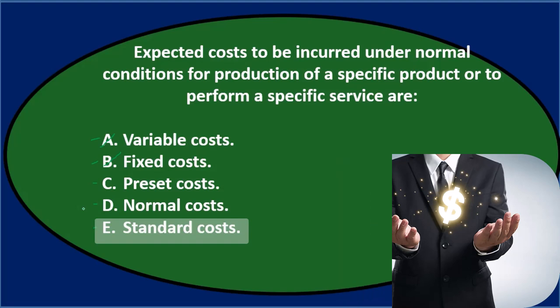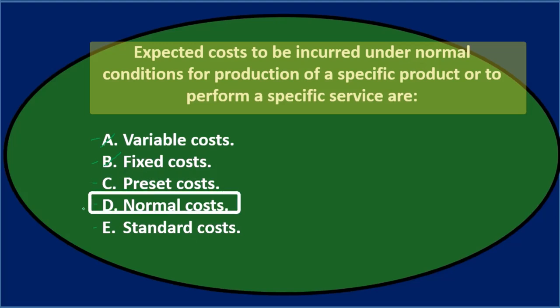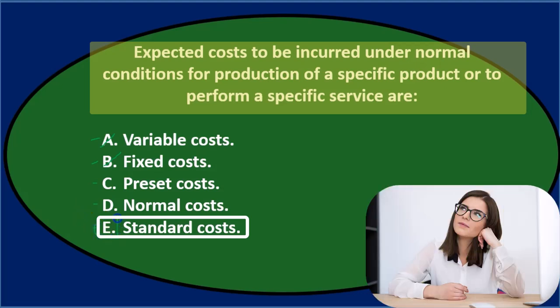Going through again: the expected costs to be incurred under normal conditions for production of a specific product or to perform a specific service are either preset costs, normal costs, or standard costs. All three terms sound applicable, but the one we typically use here is standard costs — these are the standards, the preset costs. So the final answer is E, standard costs.